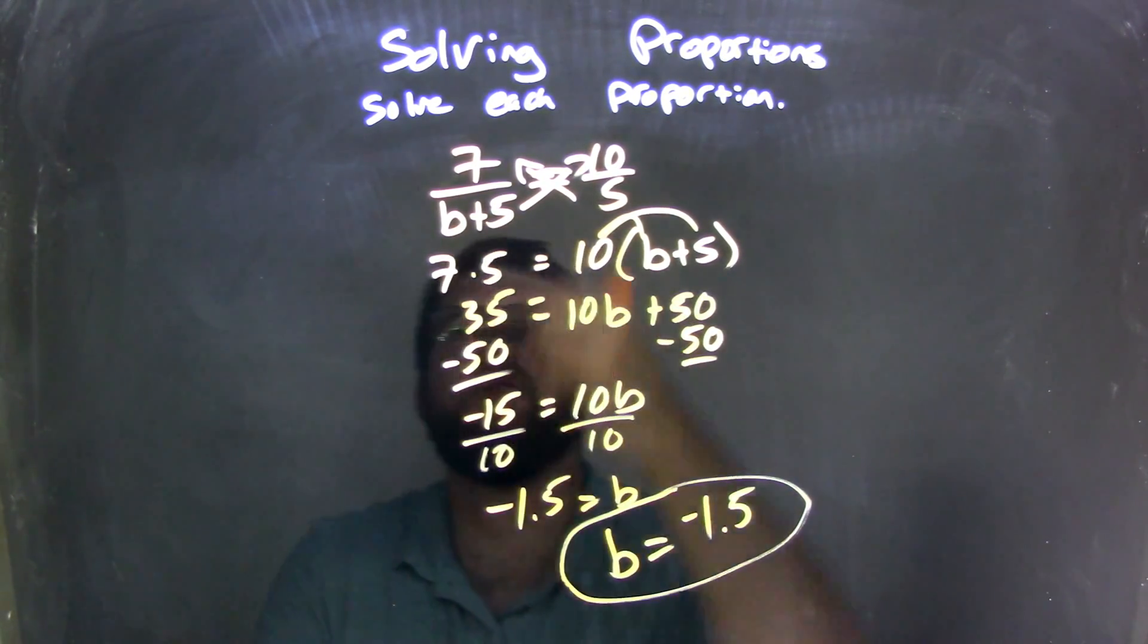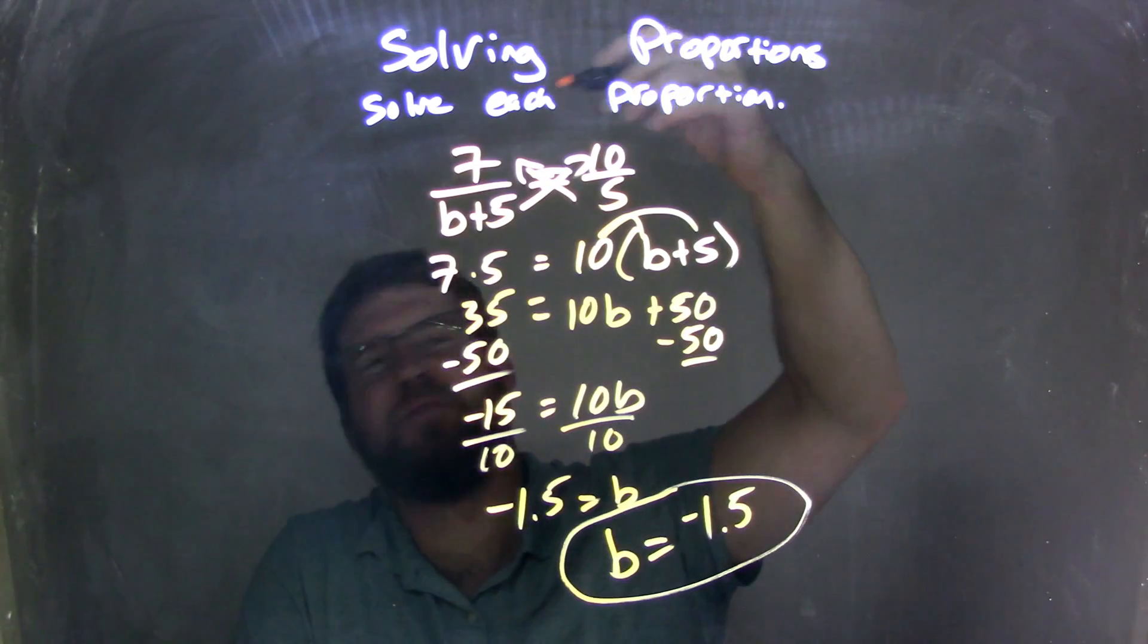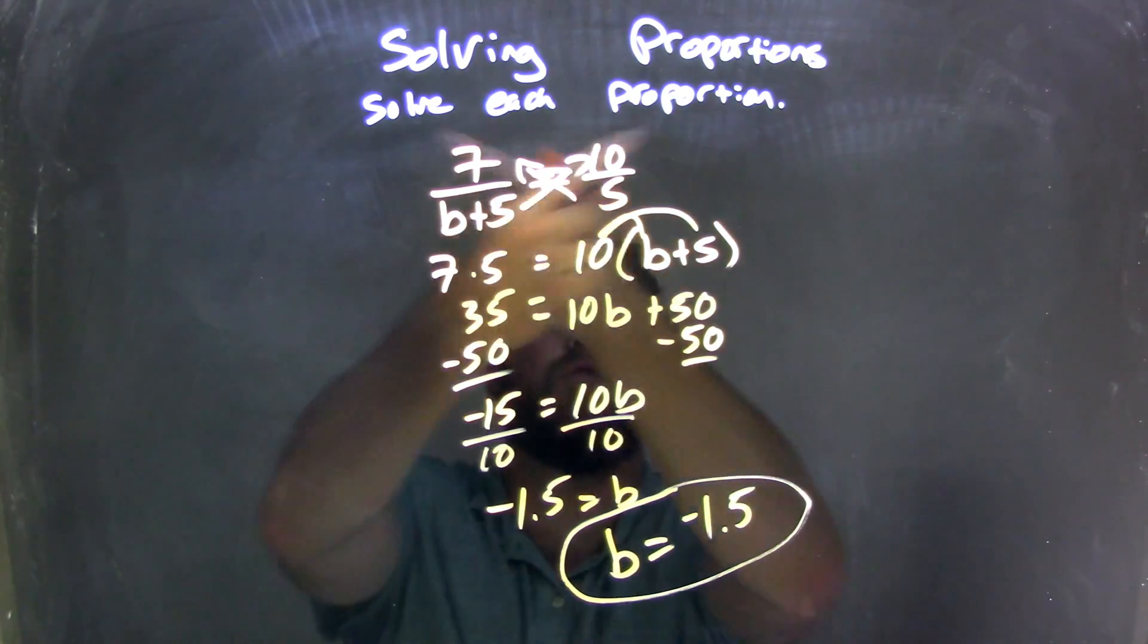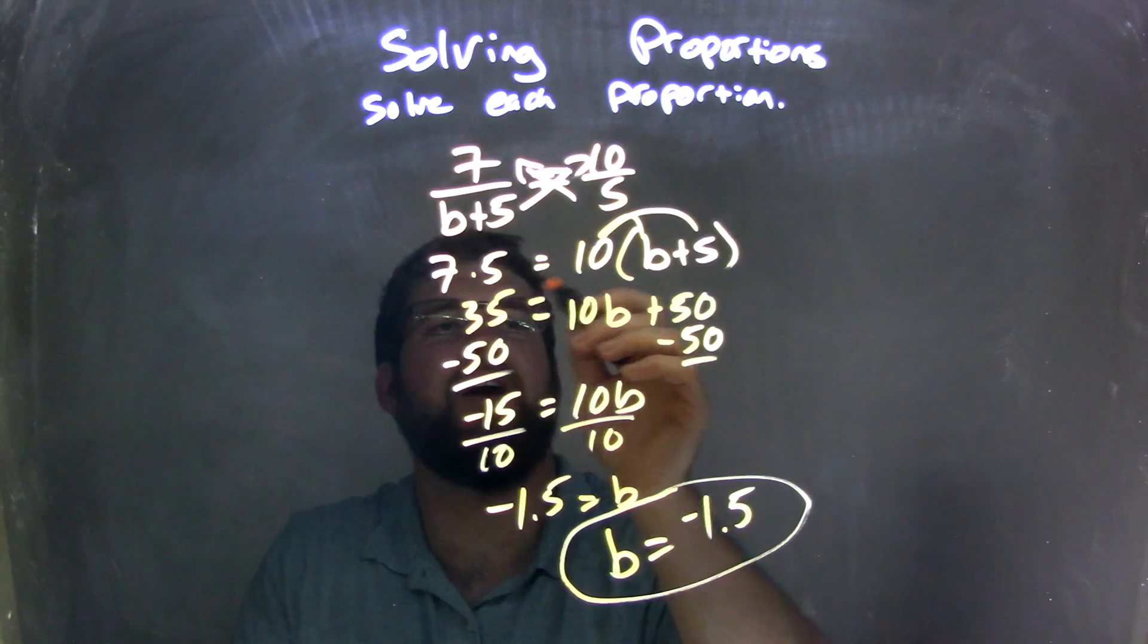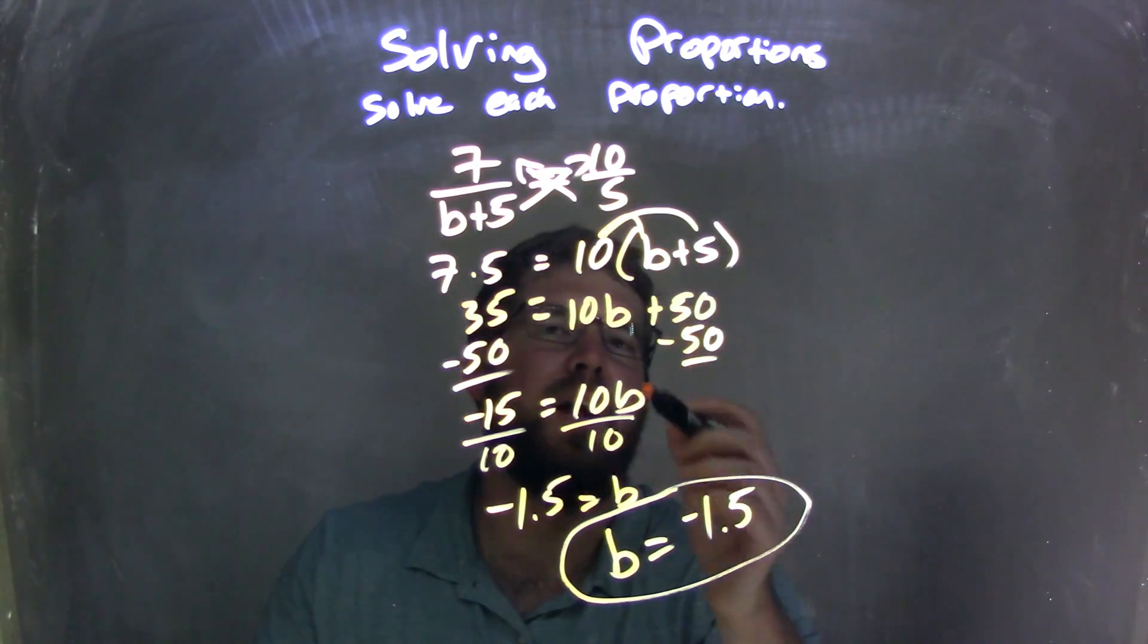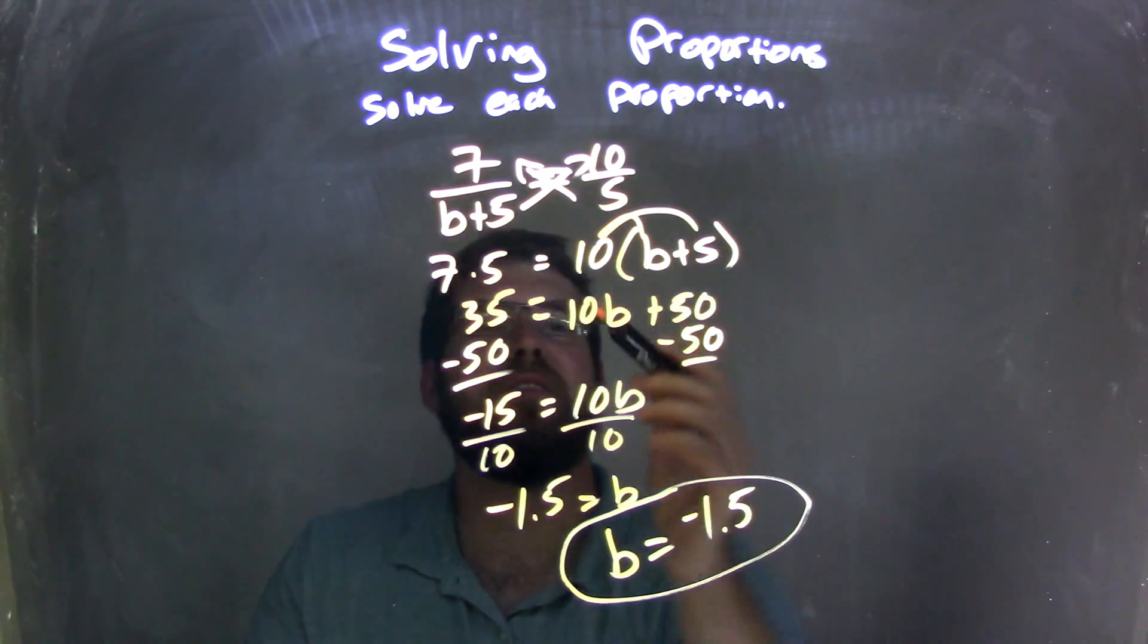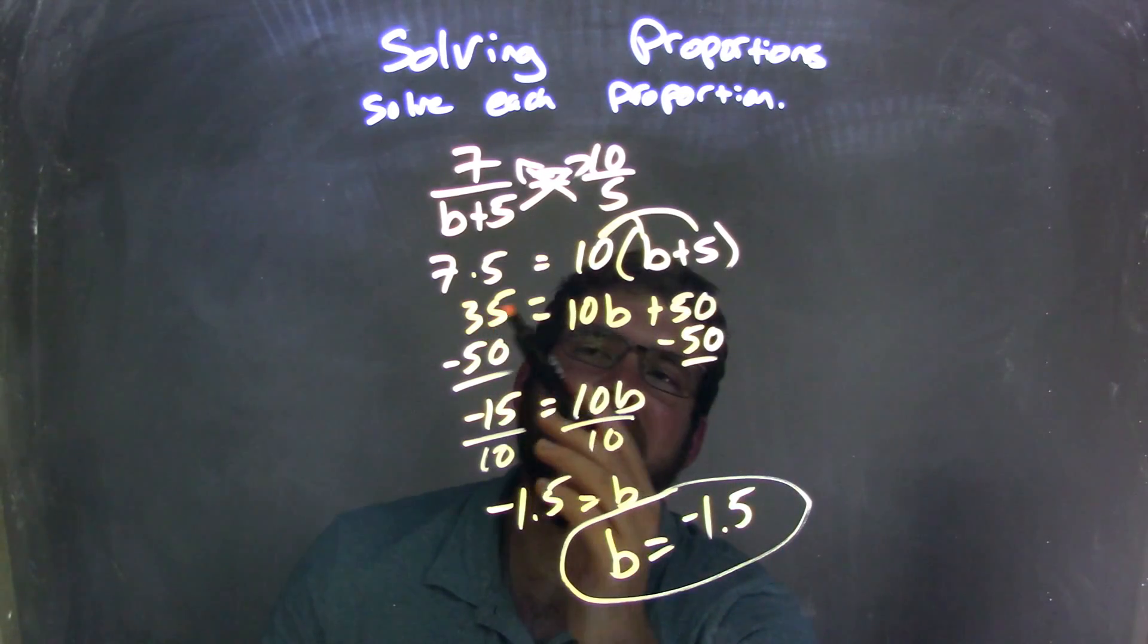Let's recap. We started with 7 over b plus 5 equals 10 over 5. Cross-multiply that: 7 times 5 equals 10 times (b plus 5). I distributed the 10 across, giving me 10b plus 50, and 7 times 5 was 35.